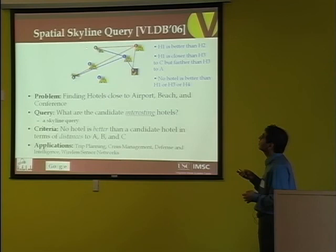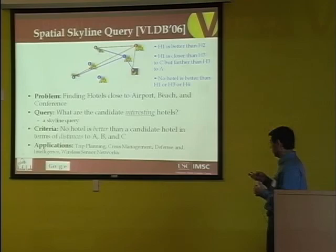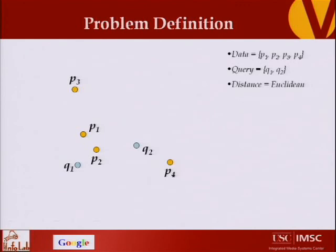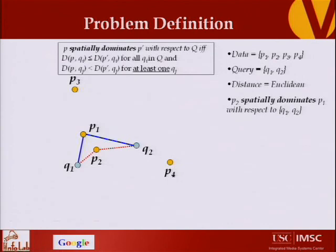In abstract terms: we have data points P1 to P4 — the hotels — and query points Q1, Q2 — the conference venue and airport. We say P2 spatially dominates P1 when the distance between P2 and Q1 is less than or equal to the distance between P1 and Q1, and the distance between P2 and Q2 is less than the distance between P1 and Q2, with at least one strict inequality.